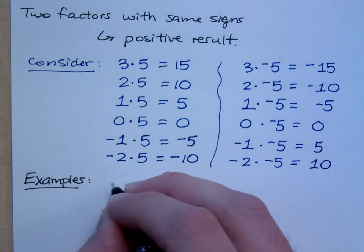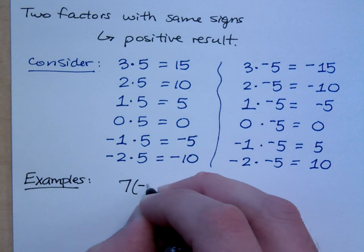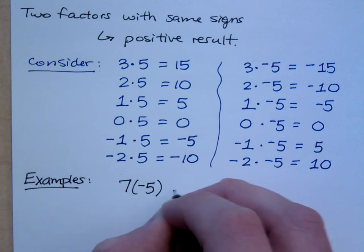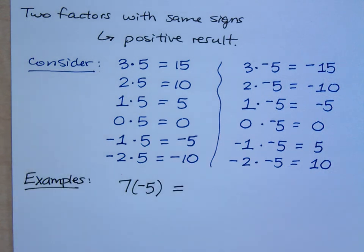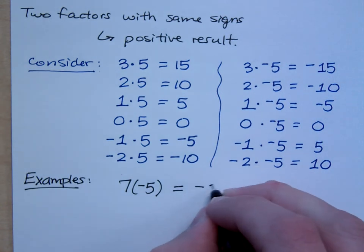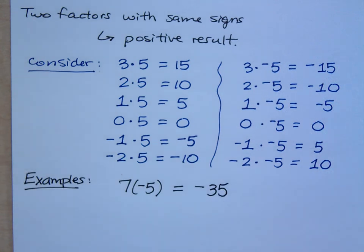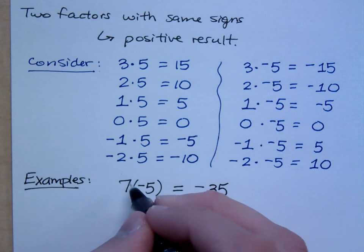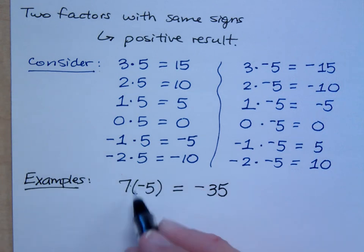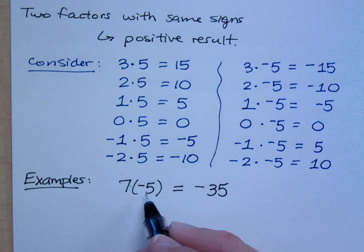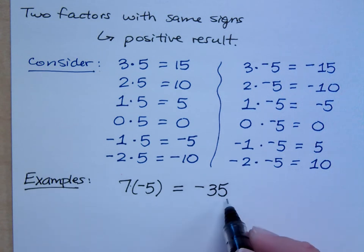If I do seven times negative five — are the signs the same or different? Different signs when multiplying, so I get negative 35. Seven times negative five means seven losses of five, which gives you a total loss of negative 35.